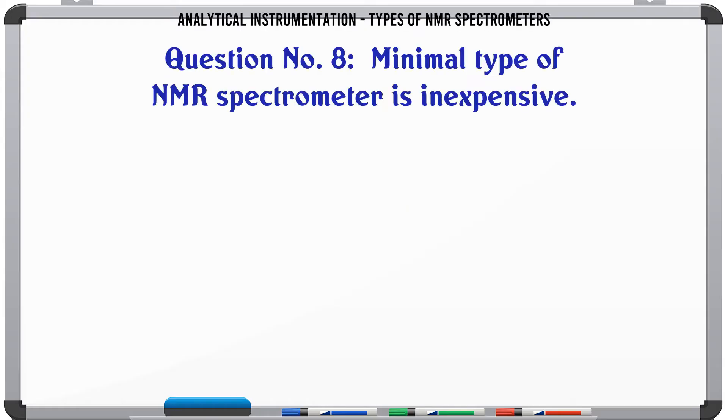Minimal type of NMR spectrometer is inexpensive. A. True. B. False. The correct answer is True.